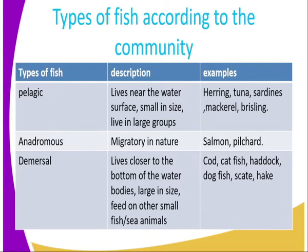The second class is the anadromous fish. These are migratory in nature — they keep moving from one place to another. Examples include the salmon and the pelagic. They don't have a specific place where you can always find them.